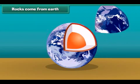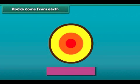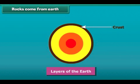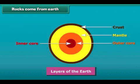All rocks come from the earth, and all three layers of the earth are made up of rocks. The outermost layer is called the crust, which is formed by solid rocks. The middle and innermost layers are known as the mantle and the core respectively. The mantle and outer core are very hot, so rocks are found there in melted form. In the inner core, rocks are solid due to high pressure.